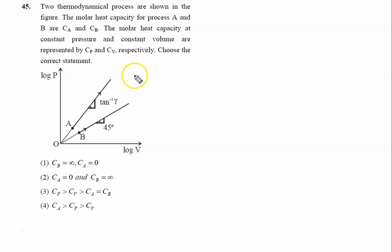Two thermodynamic processes are shown in the figure. The molar heat capacity for process A and B are CA and CB. The molar heat capacity at constant pressure and constant volume are represented by CP and CV respectively. Choose the correct statement.